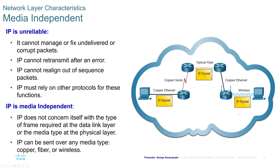IP is media independent and unreliable — it cannot manage or fix undelivered or corrupt packets, cannot retransmit after an error, and cannot realign out-of-sequence packets. It must rely on other protocols such as TCP for these functions. IP does not concern itself with the type of frame at the data link layer or media type at the physical layer, and can be sent over any media type such as fiber, copper, or wireless.